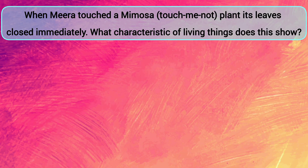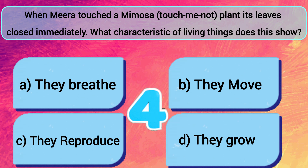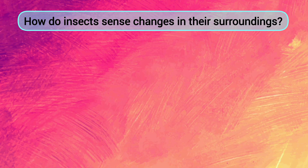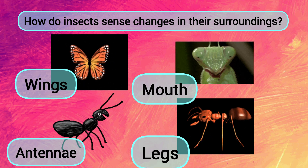When Mira touched a mimosa (touch-me-not) plant, its leaves closed immediately. What characteristic of living things does this show? A: They breathe. B: They move. C: They reproduce. D: They grow. The answer is B — they move. How do insects sense changes in their surroundings? Wings, mouth, antennae, or legs? The answer is antennae.